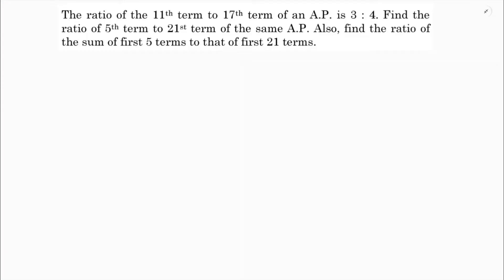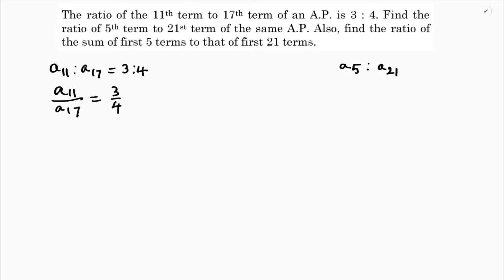So here, the ratio of the 11th term to the 17th term is 3 is to 4. And we need to find the ratio of the 5th term to the 21st term. So, a11 by a17 equals 3 is to 4. A11 is a plus 10d, and a17 is a plus 16d, so that ratio equals 3 by 4.